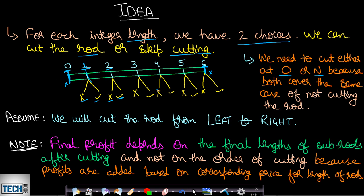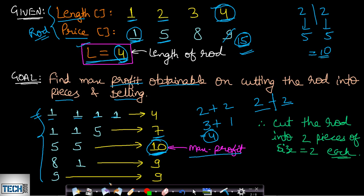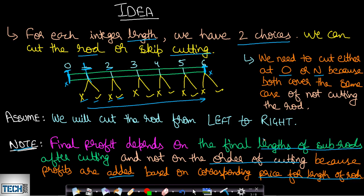We assume we cut the rod from left to right, so once a choice is made at a point we do not come back to it. One important thing to note is that the final profit depends on the final lengths of the sub-rods after cutting, not on the order of cutting. The profits are added based on the corresponding price for the length of each sub-rod. So the final configuration defines the profit, not the sequence of cuts.